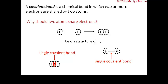Now we're going to start talking about covalent bonds. This is a chemical bond in which two or more electrons are shared by two atoms. Covalent compounds contain only covalent bonds. Take two fluorine atoms as an example — each fluorine has seven valence electrons. When they come together as the diatomic molecule F₂, each fluorine shares one electron so both have a full octet.